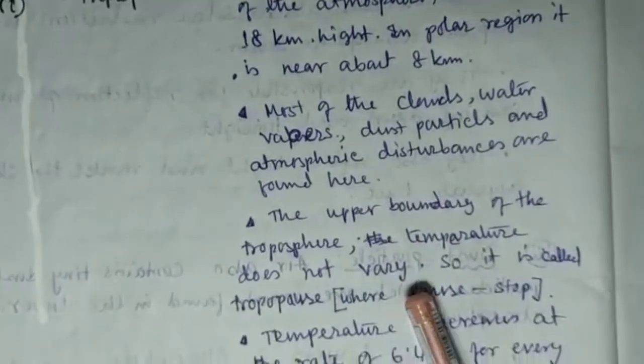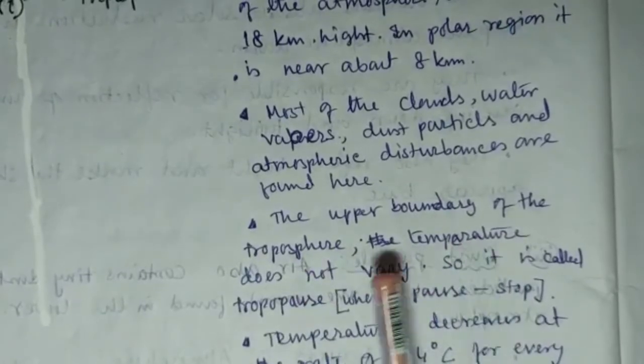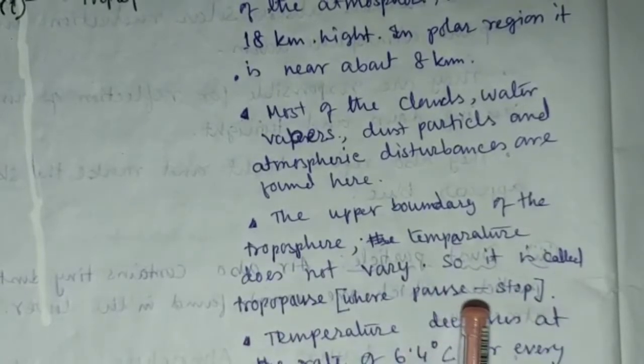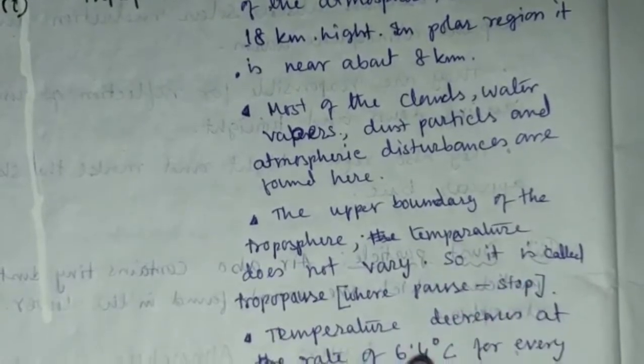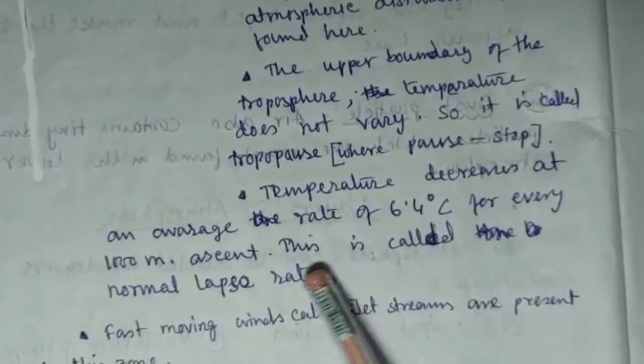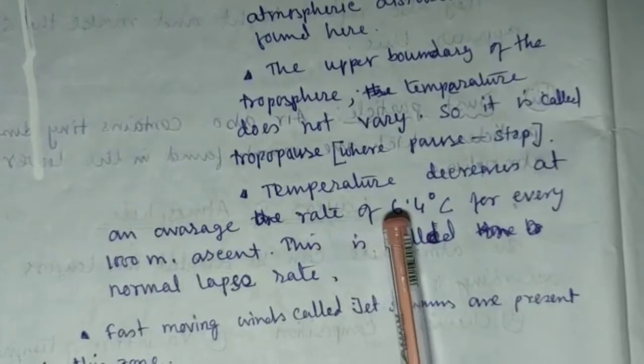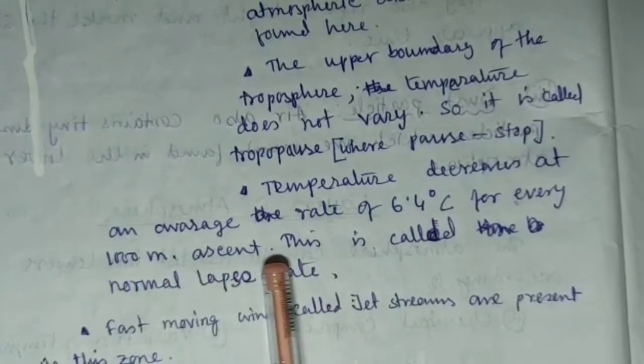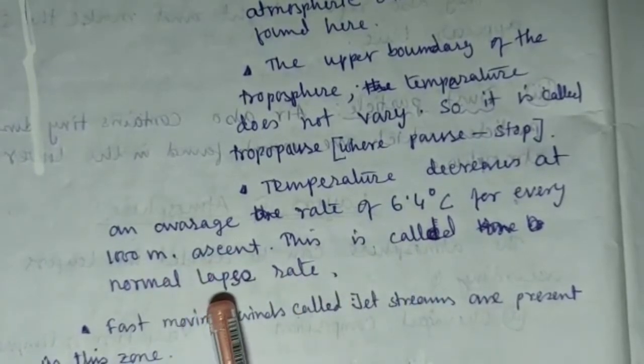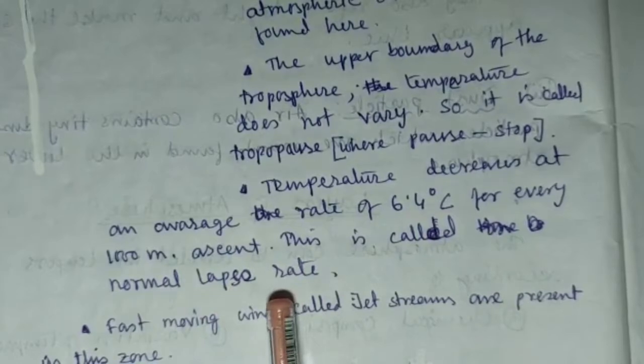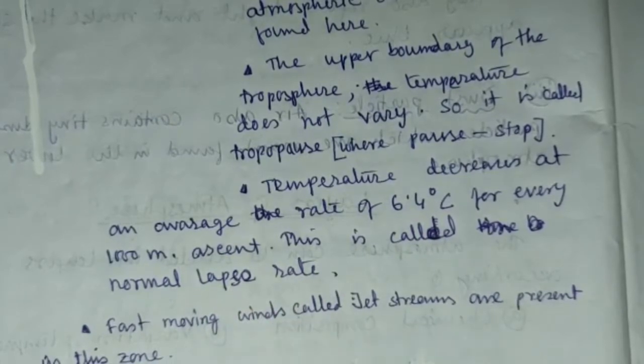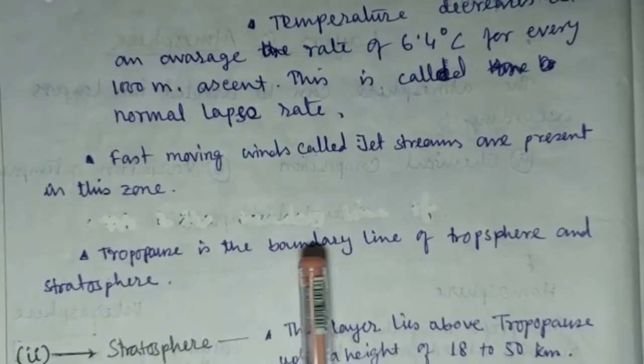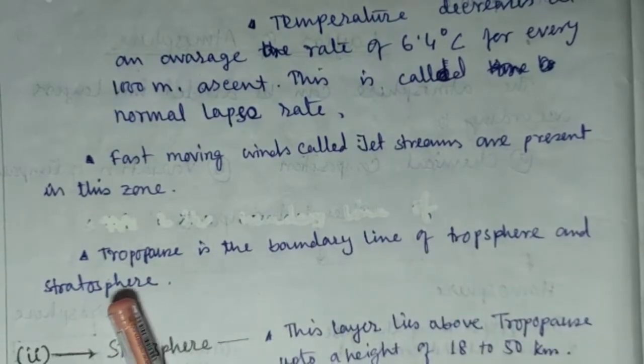The upper boundary of the troposphere where the temperature does not vary is called tropopause. Pause means stop. Temperature decreases at the average rate of 6.4 degree centigrade for every 1000 meter ascent. This is called normal lapse rate. Fast moving wind called jet streams are present in this zone. Tropopause is the boundary line of troposphere and stratosphere.